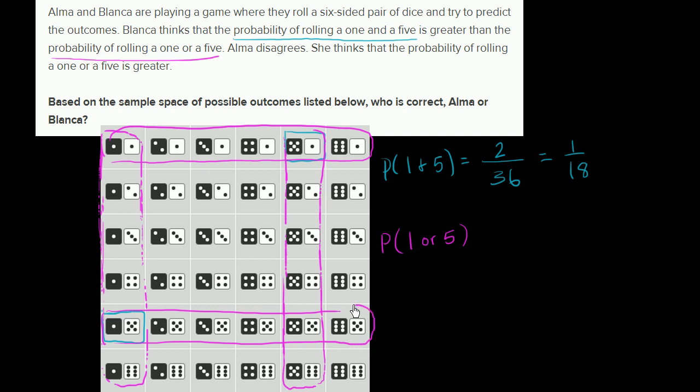So how many total outcomes are there? Well, counting them up: one, two, three, four, five, six, seven, eight, nine, ten, eleven, twelve, thirteen, fourteen, fifteen, sixteen, seventeen, eighteen, nineteen, twenty.